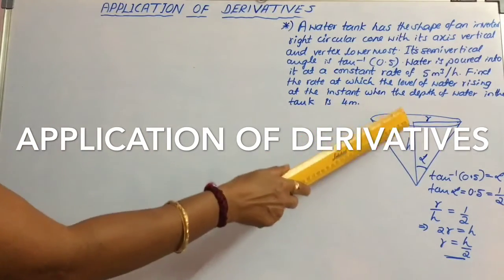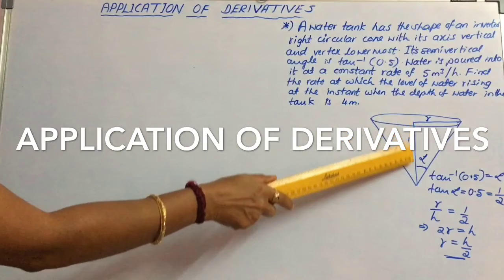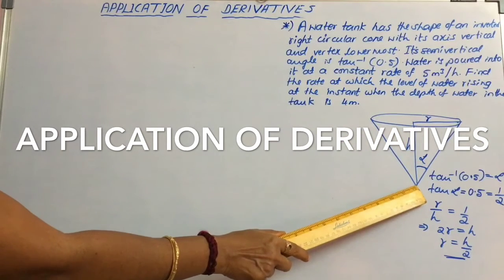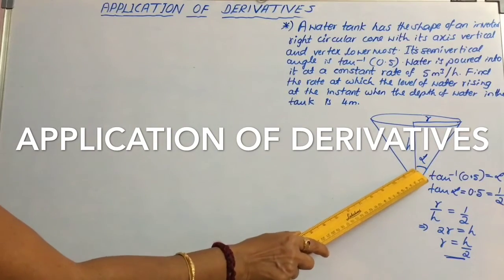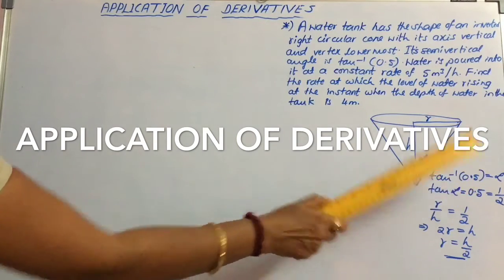Let us consider an inverted cone with its axis vertical and vertex lowermost. It is given that its semi-vertical angle is tan inverse of 0.5.